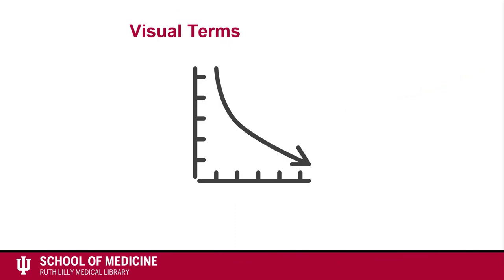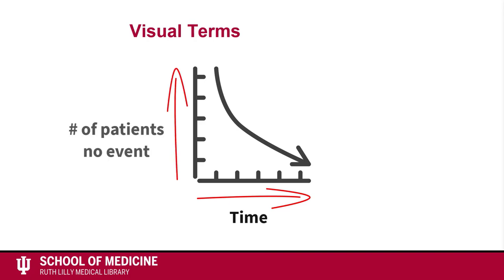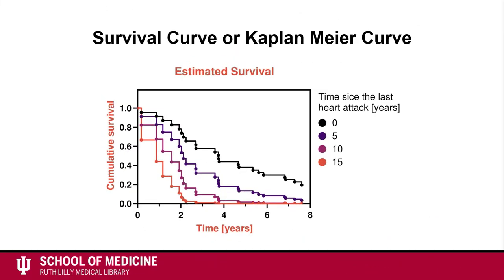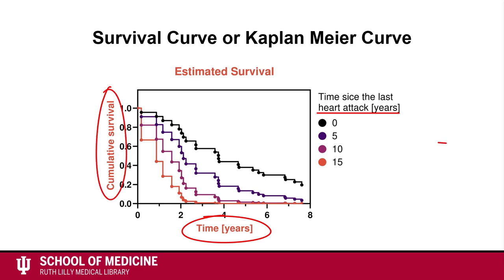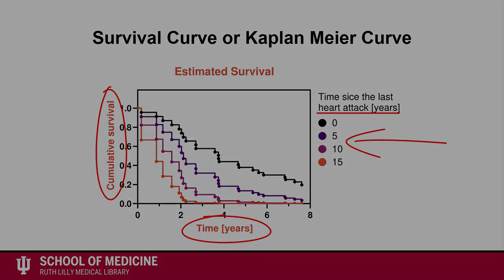Thirdly, prognosis results can be shown on a graph. The x-axis is time and the y-axis is the number of patients who have not yet experienced an event. Here is an example of a survival curve, also known as a Kaplan-Meier curve. This curve looks at heart attacks. Time is on the x-axis and survival is on the y-axis. The colors represent time since a patient's last heart attack. We will go into Kaplan-Meier curves in more detail in an upcoming video.